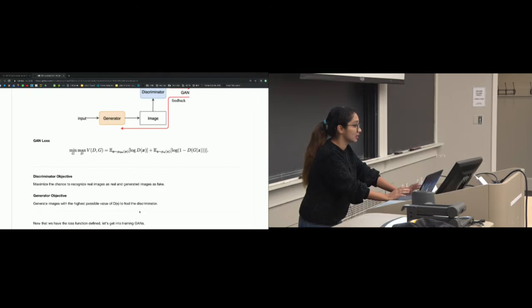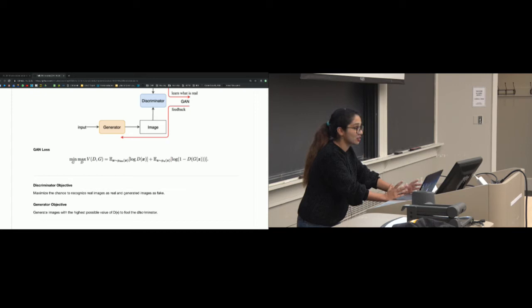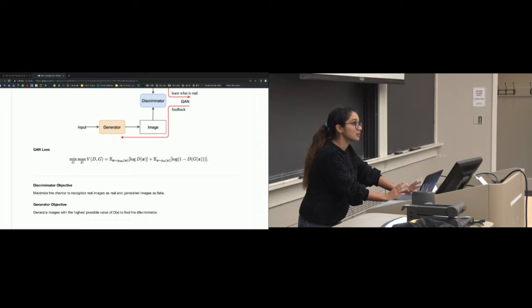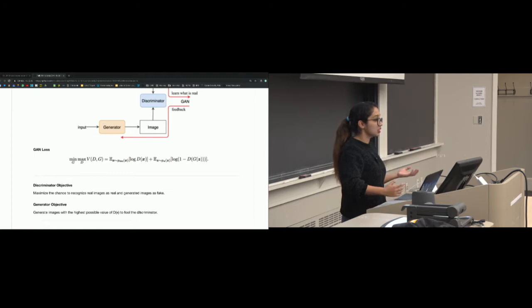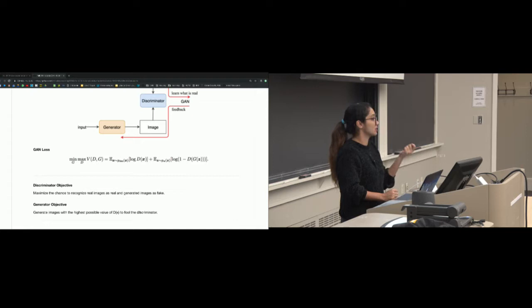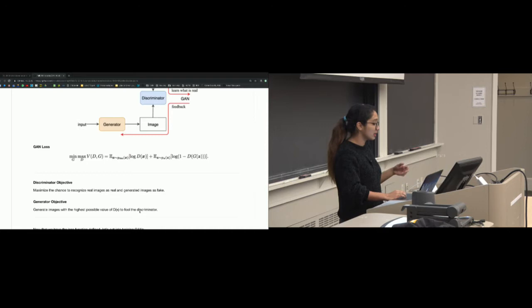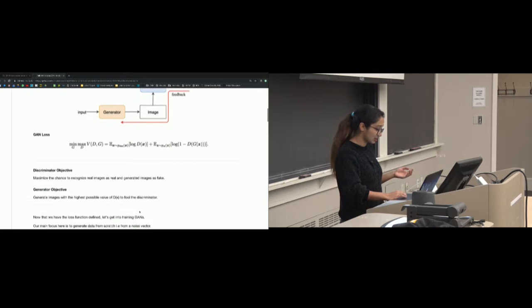When does a GAN converge? These two networks are constantly trying to maximize or minimize their objectives. A GAN is supposed to converge at a Nash equilibrium, meaning the actions of one don't change much depending on the actions of the other. In the ideal case, convergence happens when the discriminator has very small error in determining real or fake, and the generator has very small error in making its images look real. We'll discuss how to evaluate these metrics later.